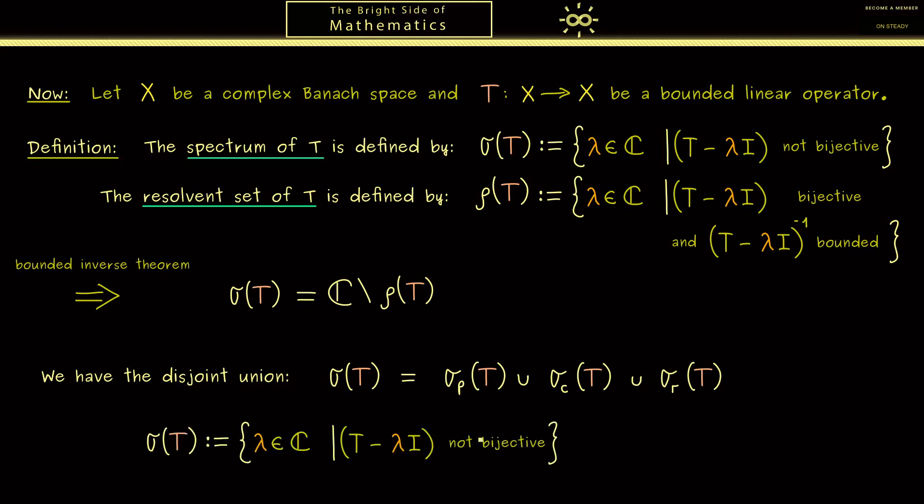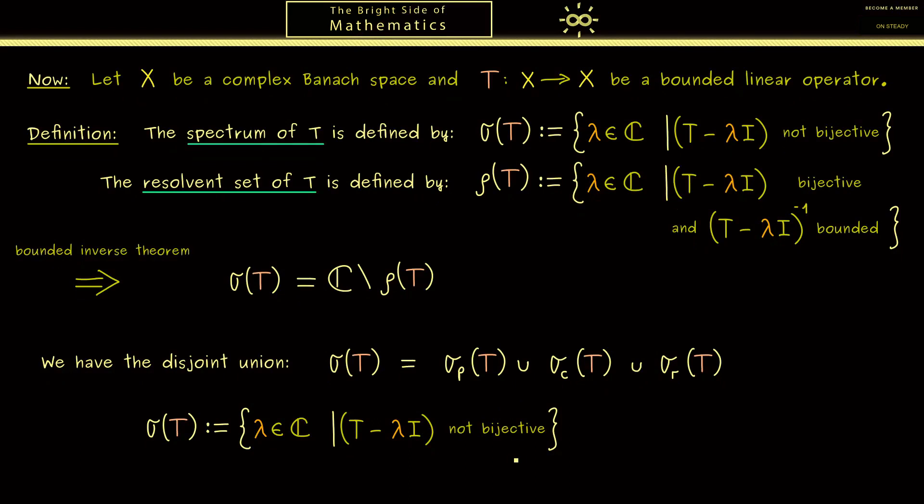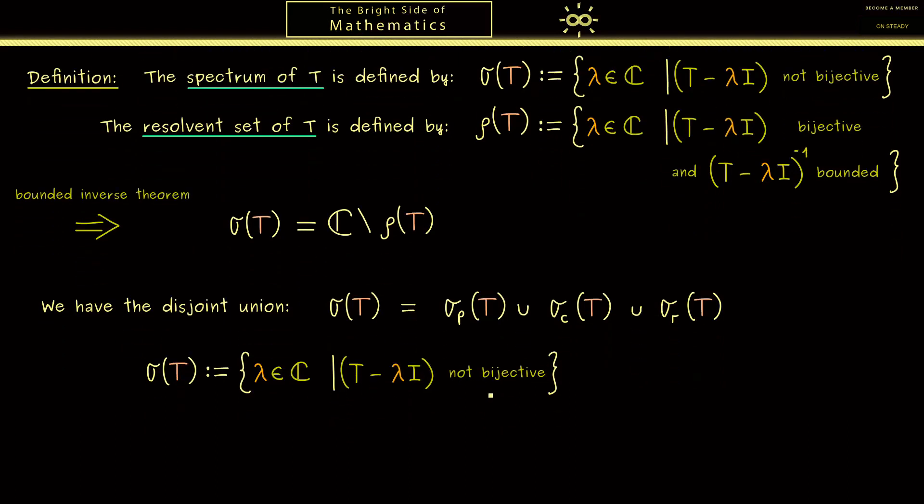Now from the discussion above you might already guess that we can split up the bijectivity here into injectivity and surjectivity. In fact, that's what we can do, and in the case that this operator is not injective, we define the point spectrum of T. Please recall we learned above that not injective means this operator has a non-trivial kernel, which means we have eigenvectors. In this sense these points are indeed the classical eigenvalues.